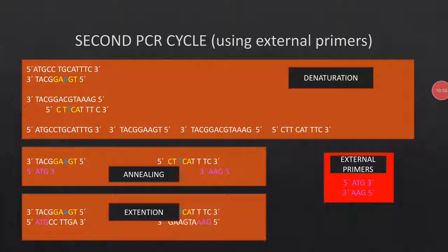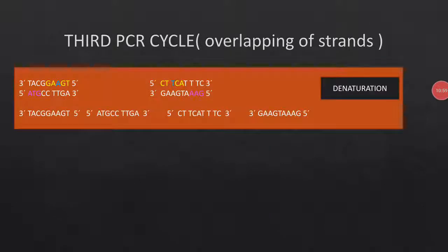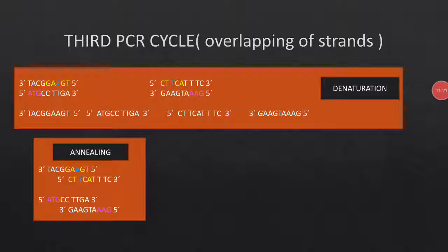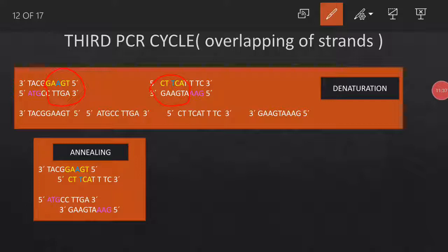In the third PCR cycle, we use the product of the second PCR cycle. Denaturation separates these four strands. In the annealing step there is an important difference: looking at the strands — I will name them one, two, three, and four — certain regions of these strands are complementary to each other.